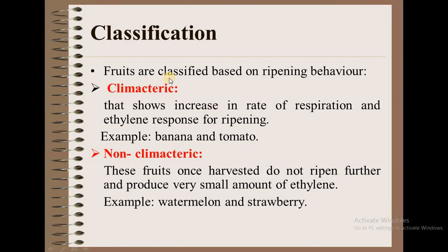Next is classification. Fruits are classified based on ripening behavior. The first one is climacteric — these fruits show an increase in the rate of respiration and ethylene response for ripening. Examples include banana and tomato. The next one is non-climacteric — these fruits once harvested do not ripen further and produce very small amounts of ethylene. Examples include watermelon and strawberry.